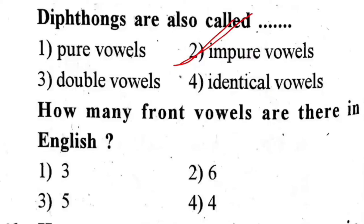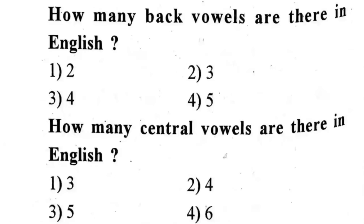Next question: How many back vowels are there in English? First one, two. Second one, six. Third one, five. Fourth one, four. The correct answer is fourth one — four. Next question: How many back vowels are there in English? First one, two. Second one, three. Third one, four. Fourth one, five. The correct answer is fourth one — five.